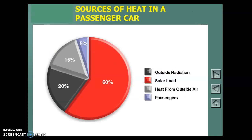Where does that heat come from? Outside radiation, solar load, heat from outside air, and of course passengers as they breathe and create heat inside the cabin — the more people, the stuffier and warmer it gets. So we need to remove this heat to make it comfortable in the car. That's the point of AC, whether it's in a car, a refrigerator, or a central cooling system — making something cold by removing heat. The whole process depends on the refrigeration cycle.